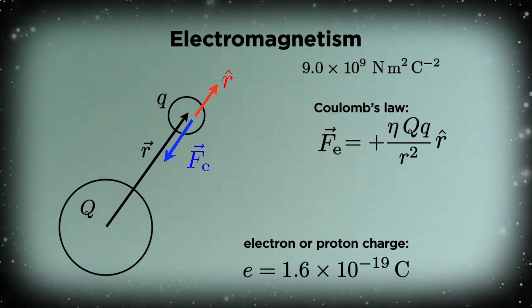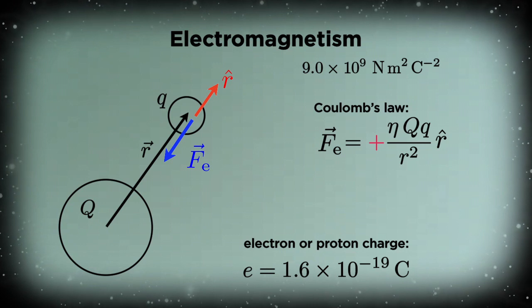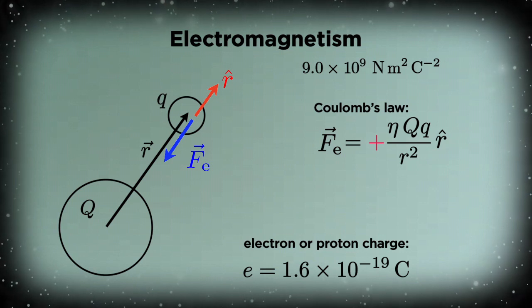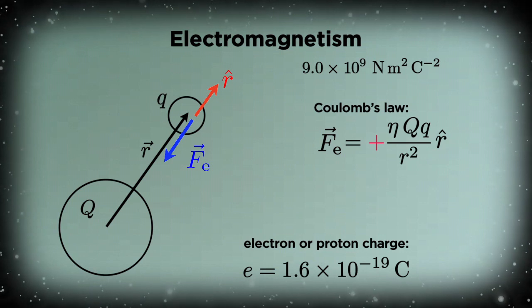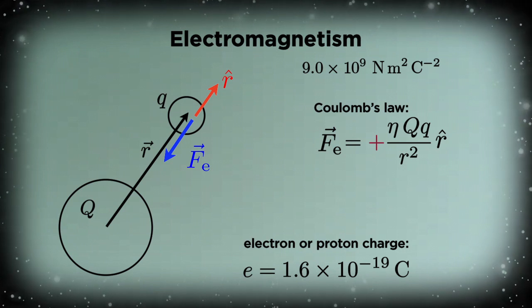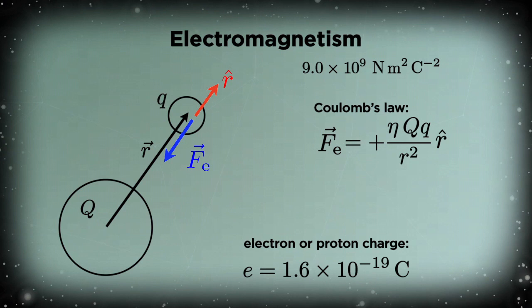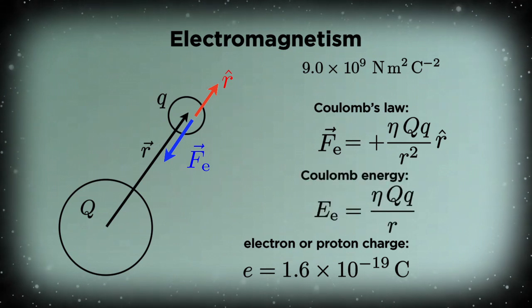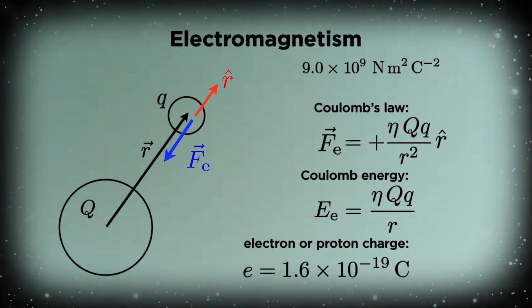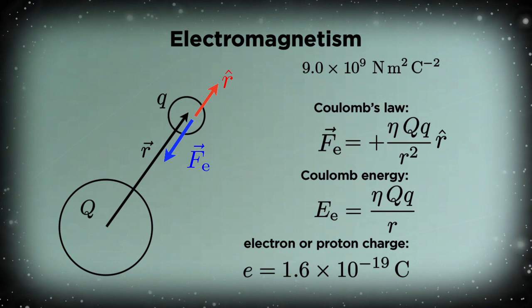Also, notice the force law has a plus sign this time, not a minus sign. When the product of the charges is positive, that is, when they're both the same sign, then the force is repulsive, pushing the charges apart. When the charges have opposite signs, like an electron and a proton, they attract. We can also write down the potential energy associated with the electrical attraction or repulsion. That's the so-called coulomb energy, which, as in the case of gravity, varies as one over r.